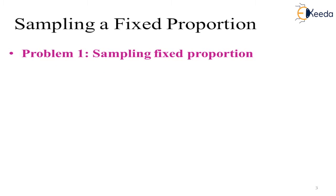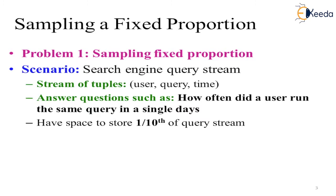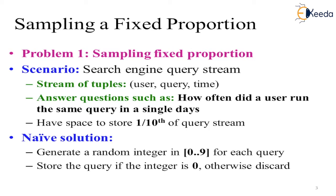Sampling a fixed proportion, let's understand problem number 1. Scenario: search engine query stream. Stream of tuples, we want to find out how often did a user run the same query in a single day. That is the question we need to solve. So what we are going to do is we will take only 1 tenth of the query stream, which may not give a correct result. So what is the solution for this? Generate a random integer 0 to 9 for each query. Store the query if the integer is 0, otherwise discard it. That is the simple solution.